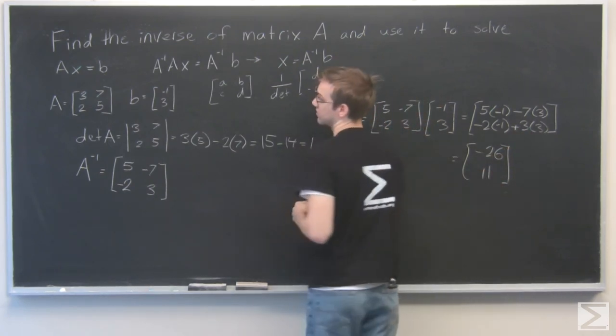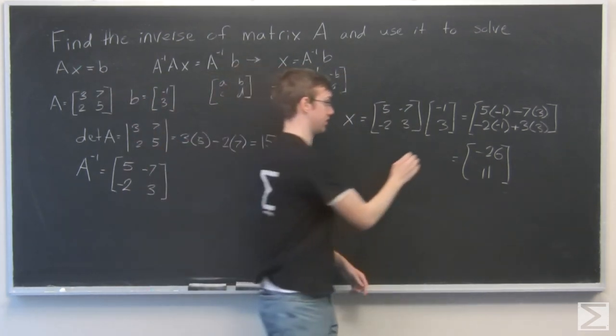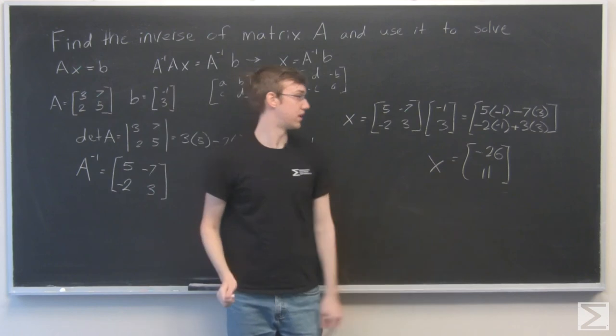So the solution to the system Ax equals b is x equals minus 26, 11.